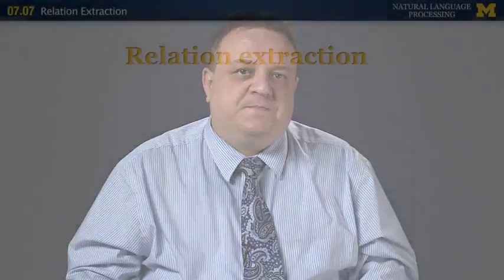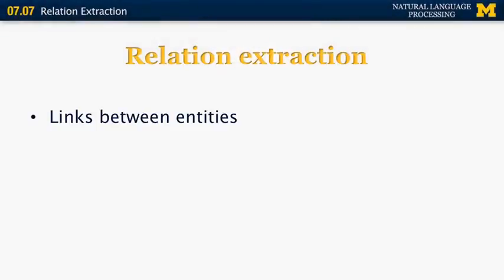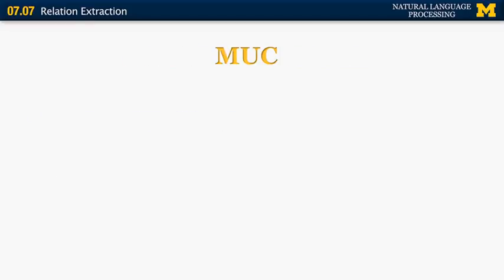Welcome back to Natural Language Processing. Now we're going to continue our topic on information extraction by focusing on relation extraction. So what is relation extraction? If we have entities, we can often be interested in the links between those entities. For example, a certain person works for a certain company, or a certain company manufactures a certain product, or a certain company is located at a certain location.